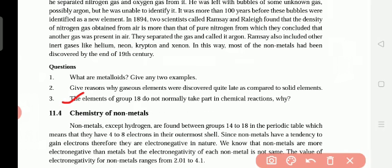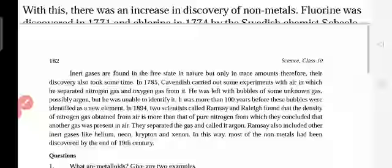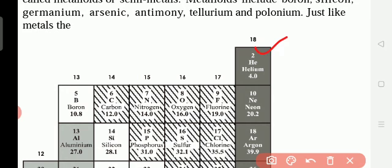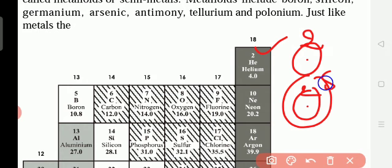The third question: The elements of group 18 do not normally take part in chemical reactions. Why? Because group 18, their outermost shell is filled with electrons. They have no need of other electrons to fill the octet. That is why they don't react with any other elements. We call them inert gases, and also we find them in trace amounts in nature.